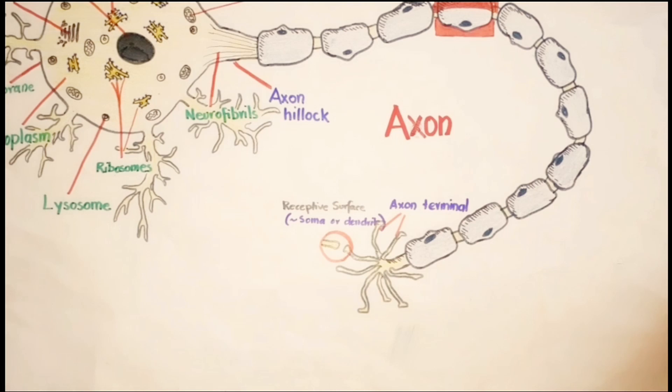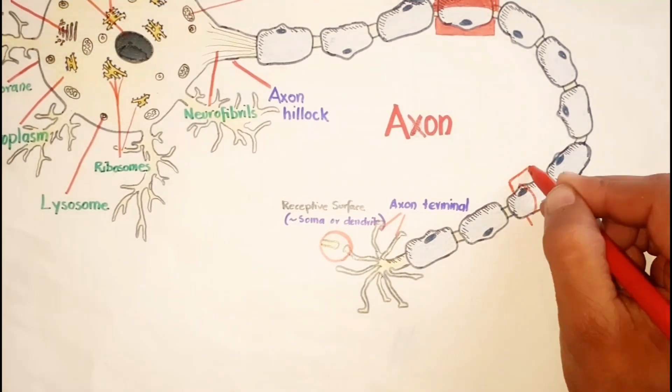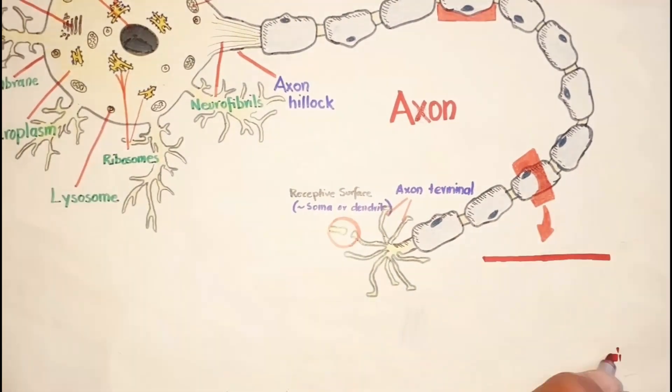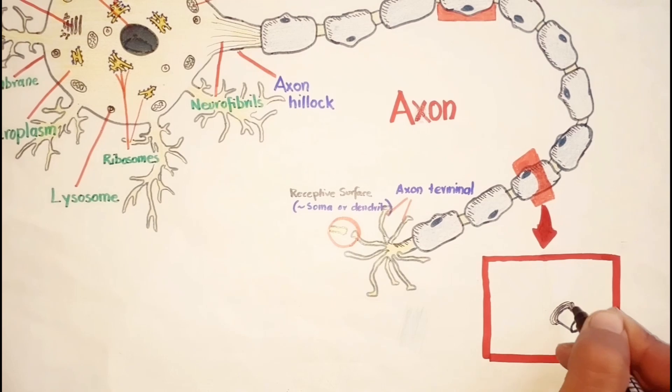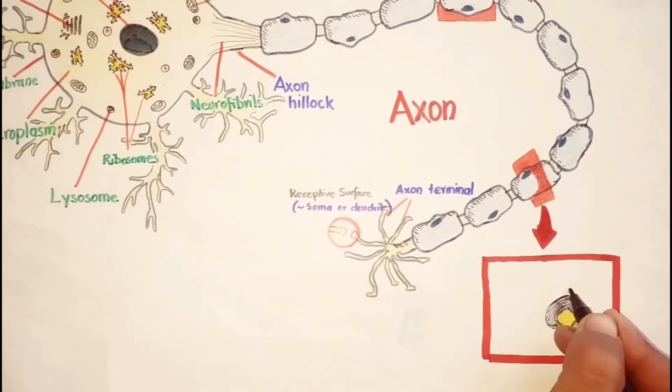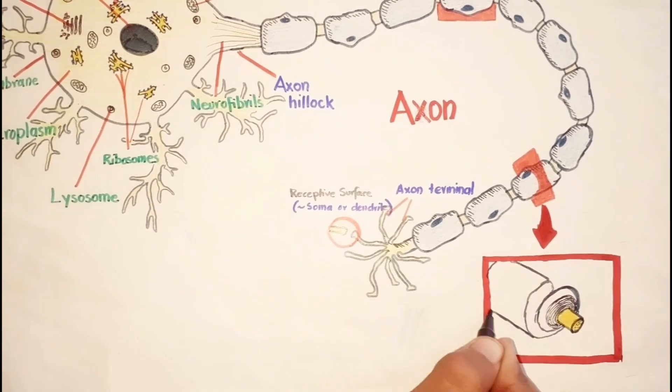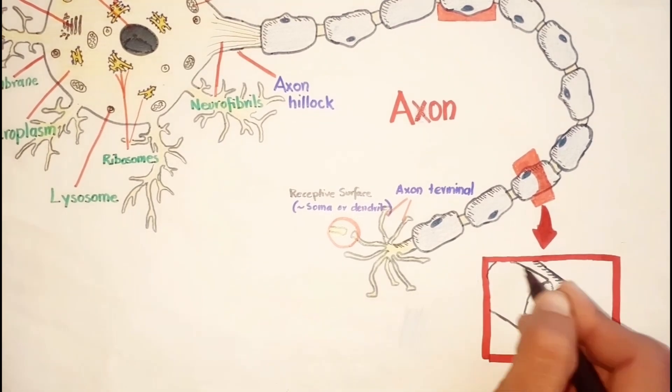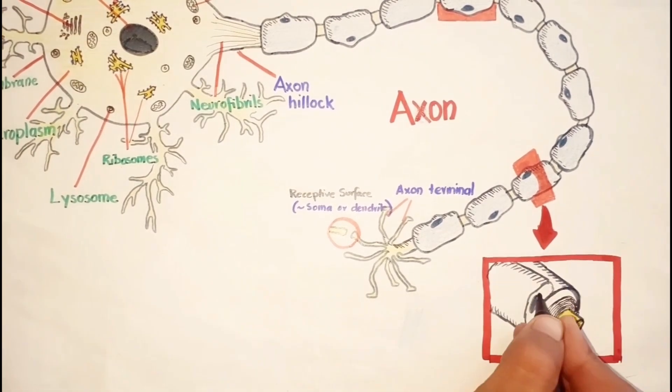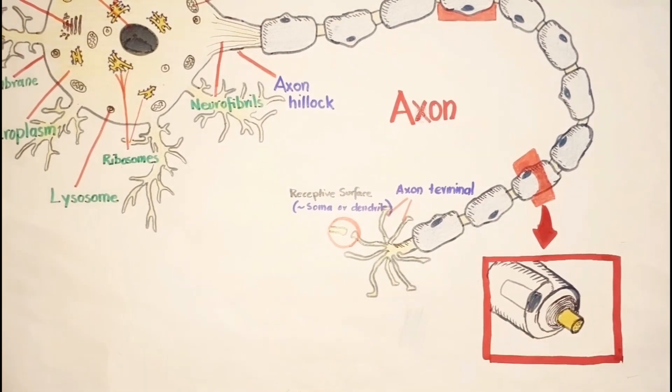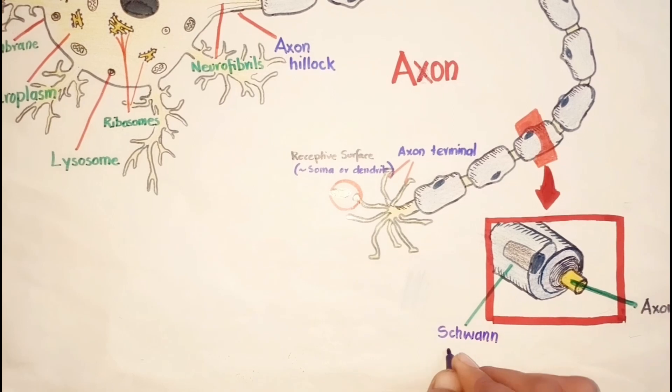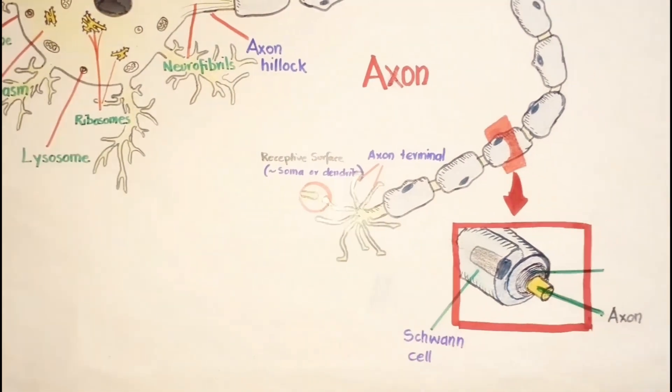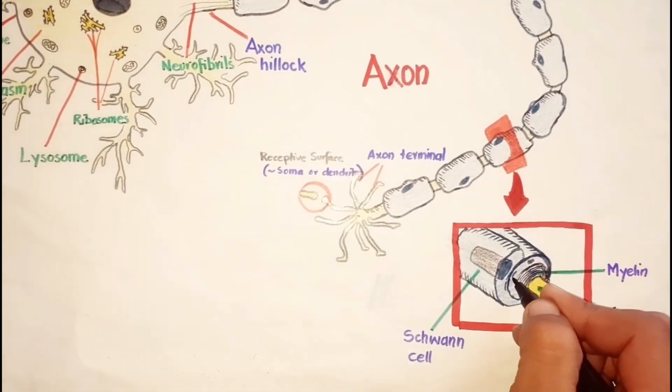By taking a cross section of here we can say that Schwann cells wind tightly around axons, somewhat like a bandage wrapped around a finger, coating them with many layers of cell membrane that have little or no cytoplasm between them, and it is called the myelin.